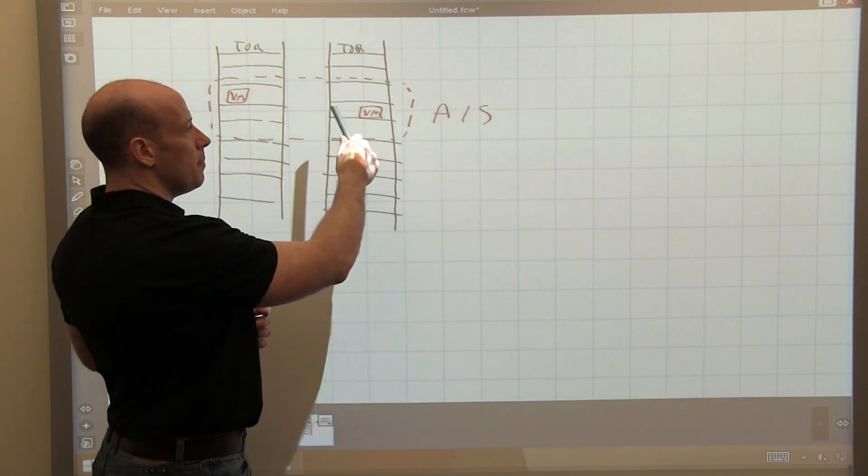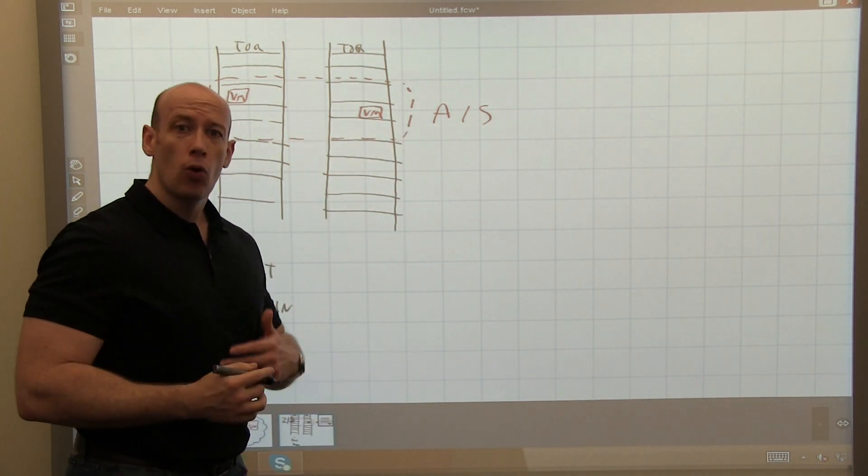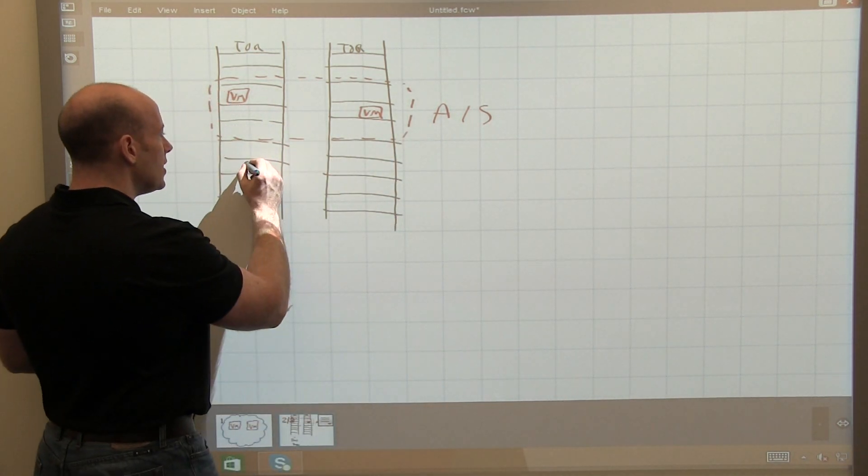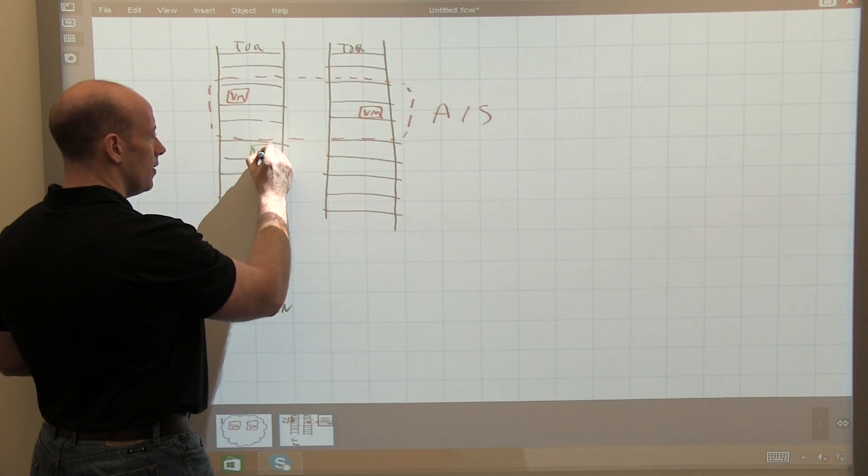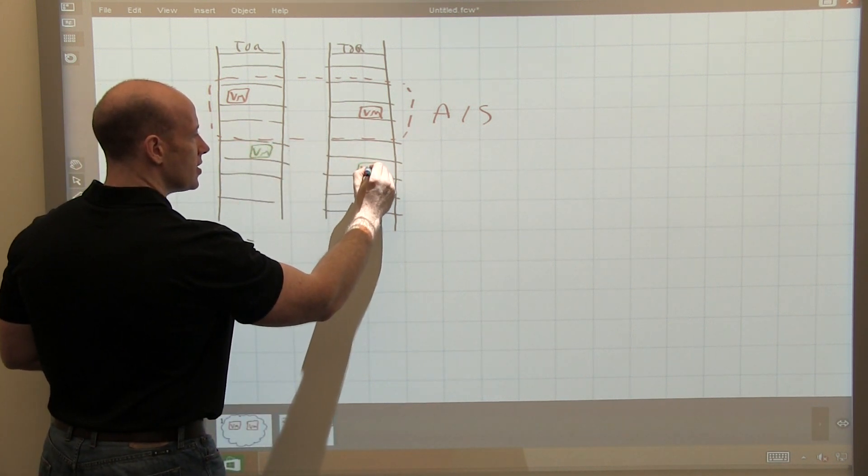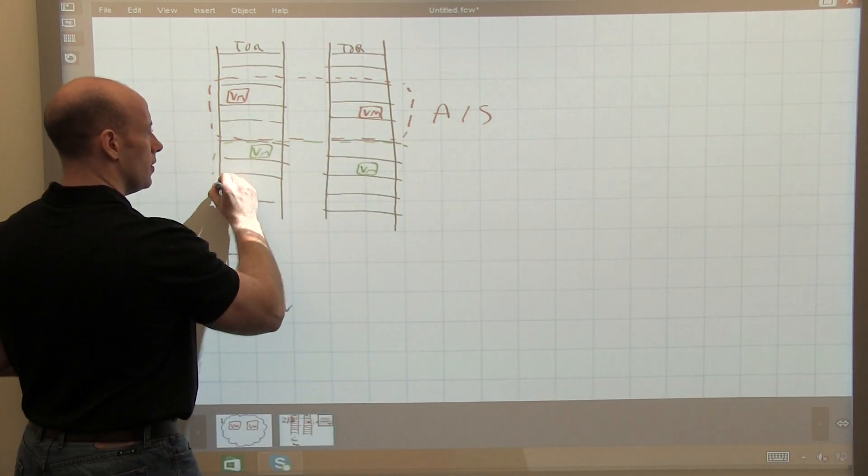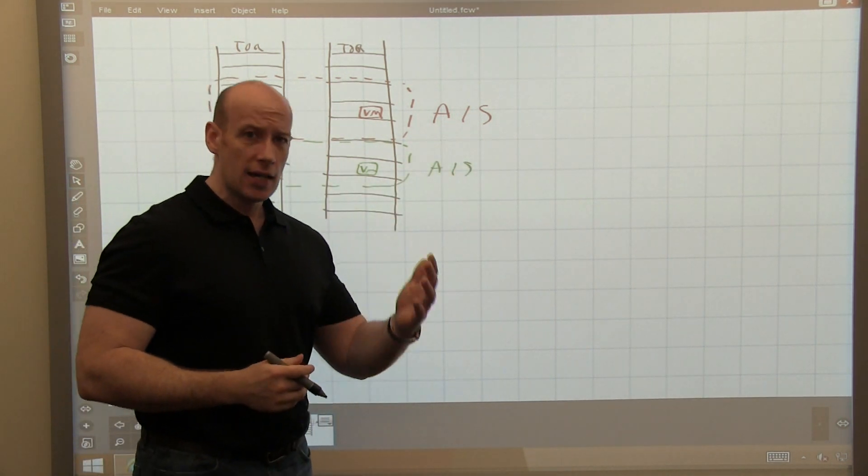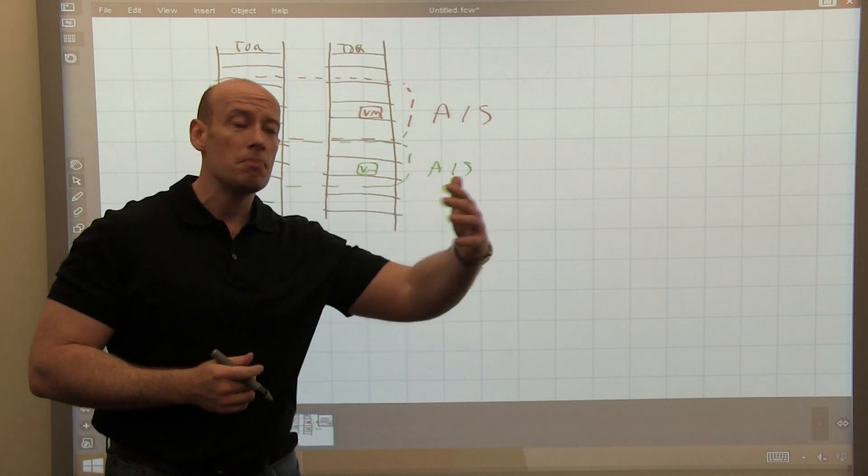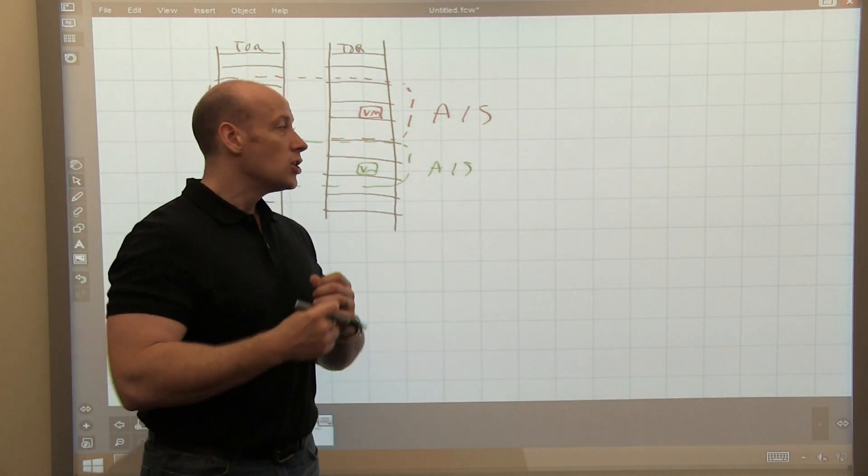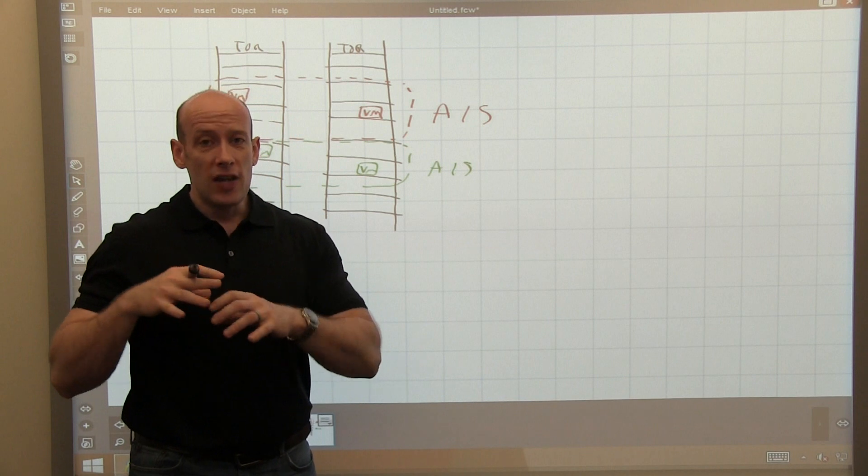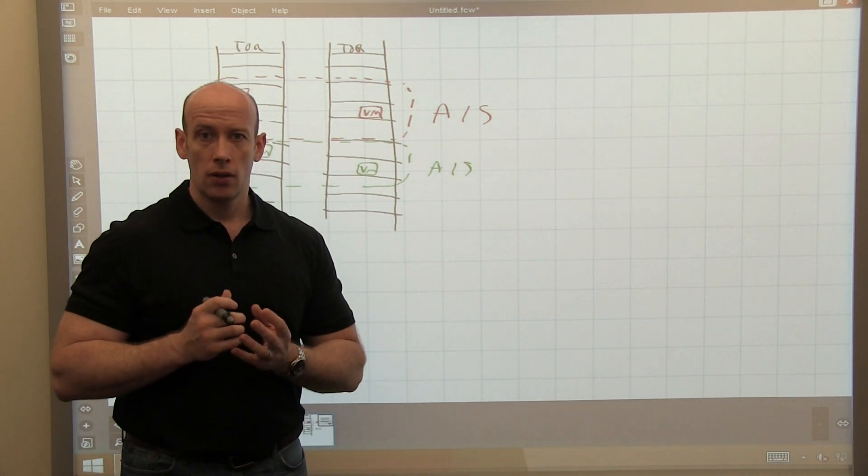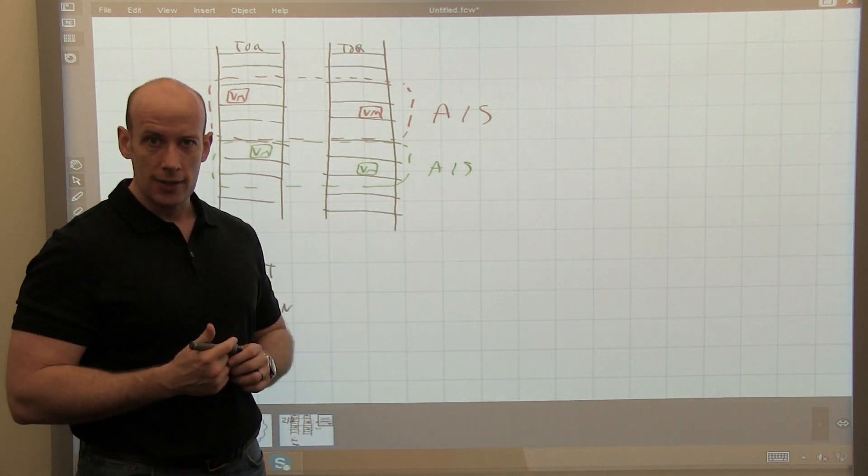So if that was my maybe SQL, if I wanted to deploy IIS servers, I would create a different availability set for my IIS servers. I would create a different availability set for my domain controllers, another availability set for some application, etc. So I never mix workloads. One availability set for each unit of work. So I want to make sure it's split over fault domains.